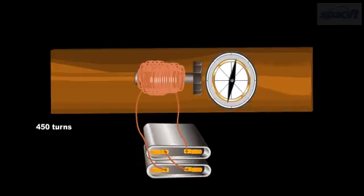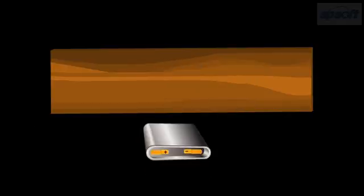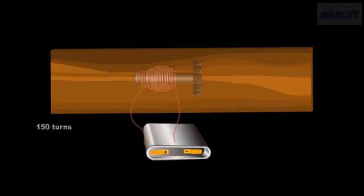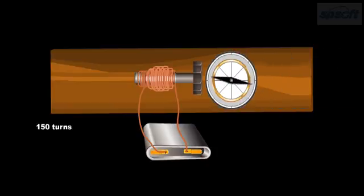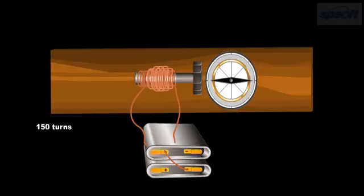Let us now study the effect of electric current by using only one dry cell. Connect the terminals of the coil of 150 turns to only one dry cell. You will observe a certain deflection. Then connect the terminals of the coil to two dry cells. What do you observe? You will observe a greater deflection.